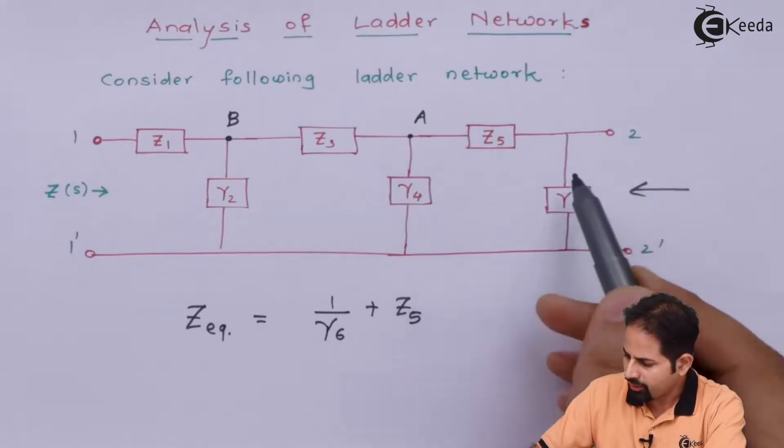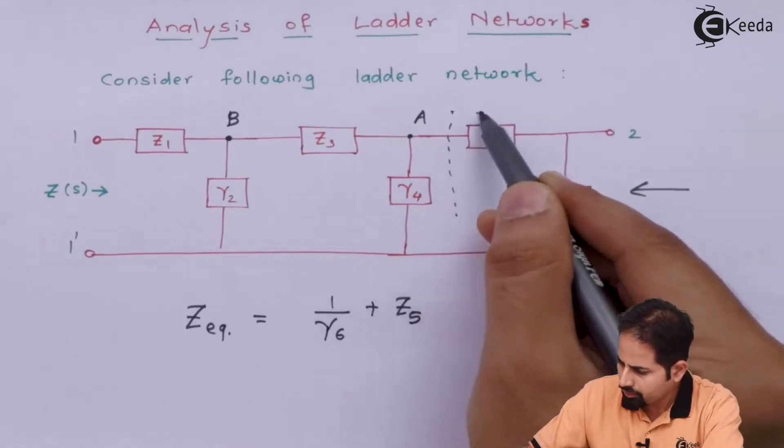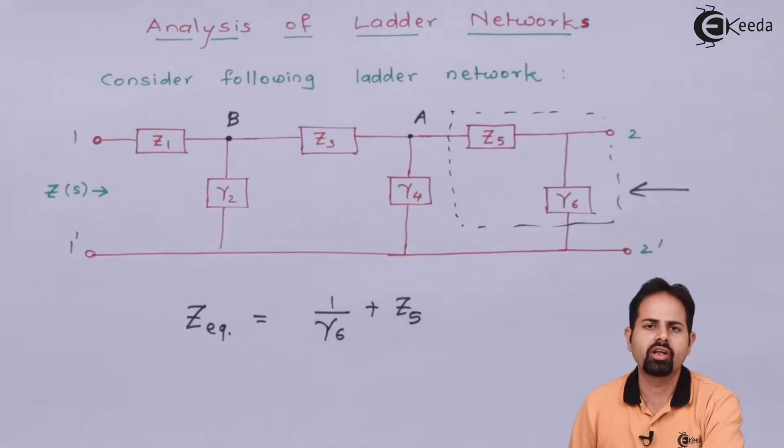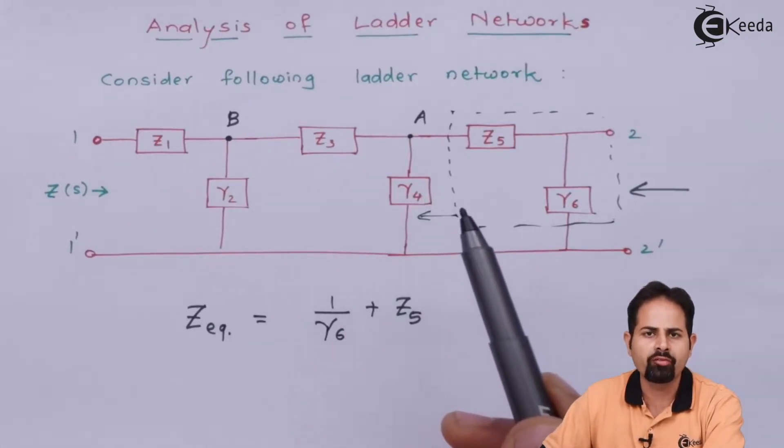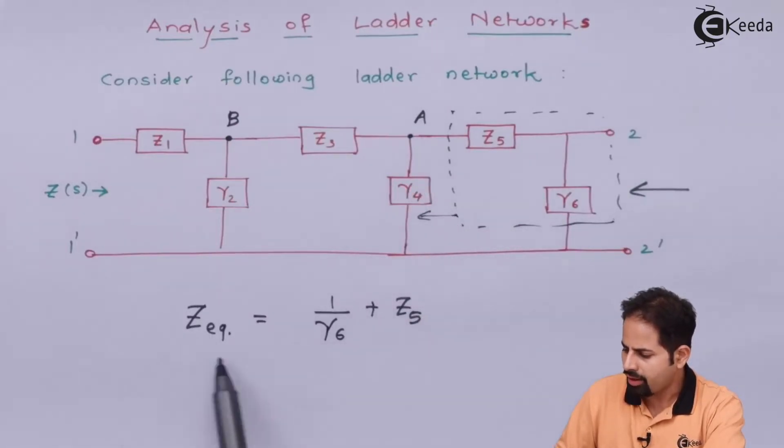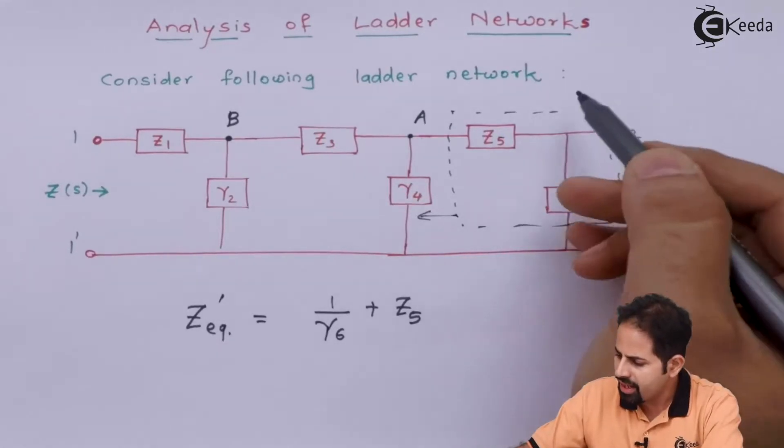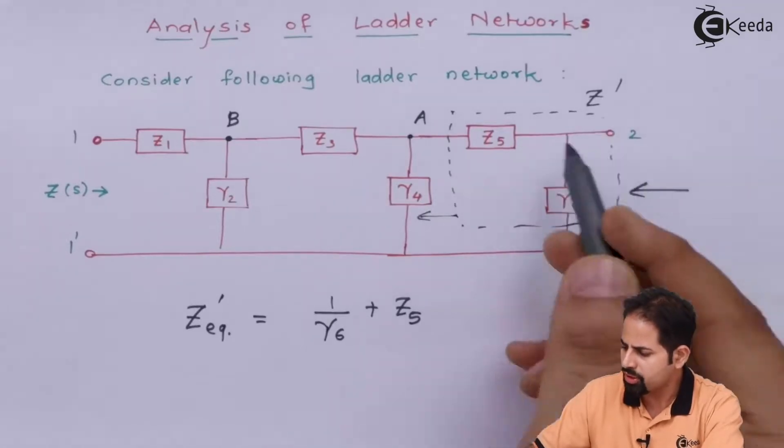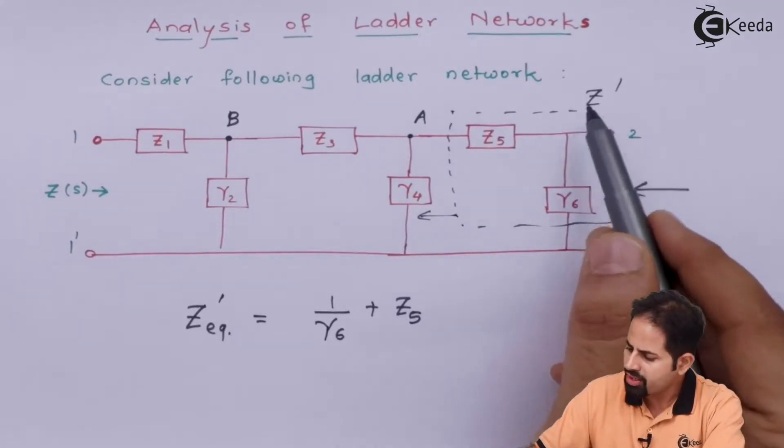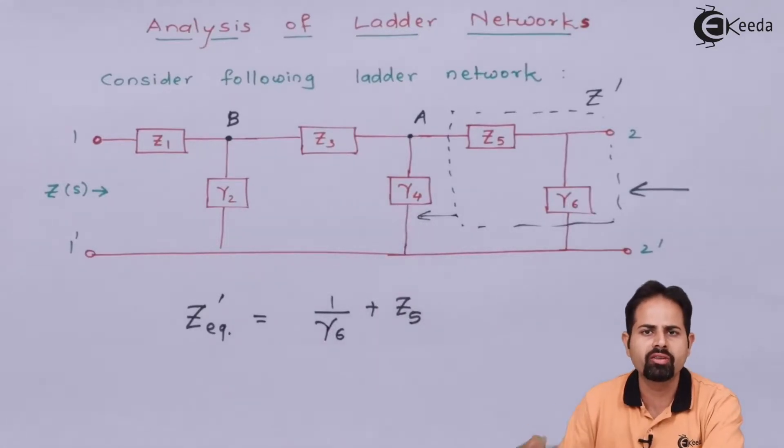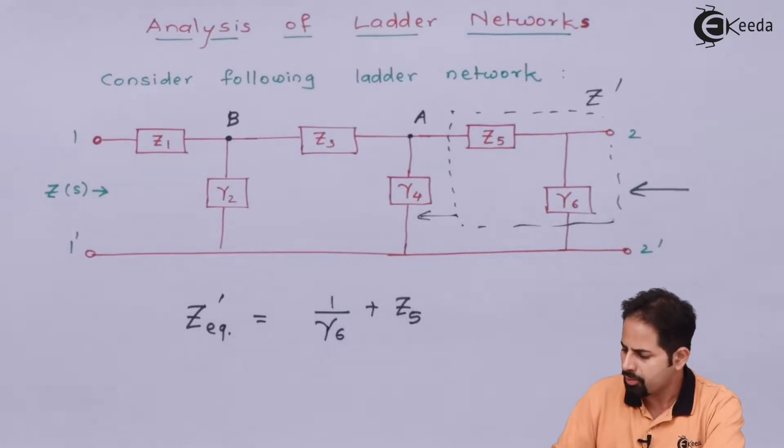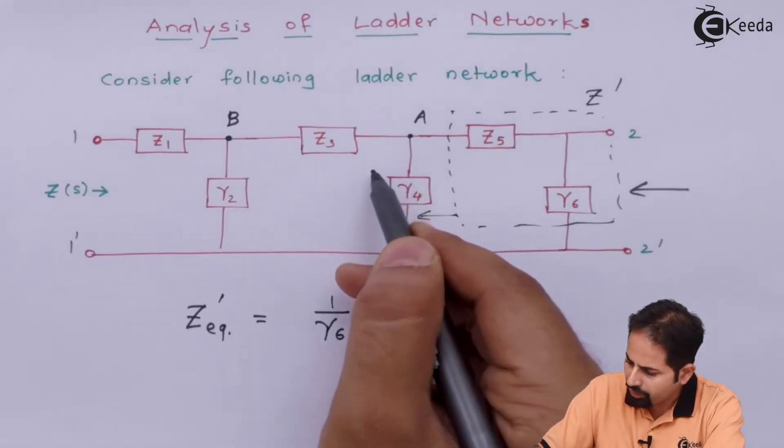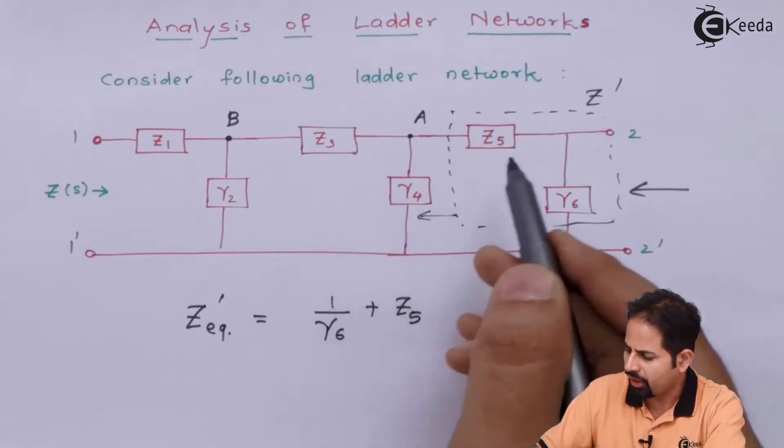Now we will go further. So right now we have covered this much region. Now when you come here, there is again admittance which is Y4. So because it is admittance and we have already calculated equivalent impedance, let us give this name as Z dash. So this Z dash is equivalent impedance which corresponds to this black box. When it is to be added with this admittance, inverse is required. So what is required is 1 over Z equivalent dash plus Y4. And so at this point, if you take this Y4 into consideration along with this.